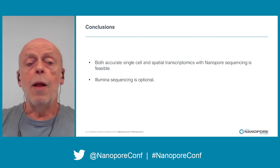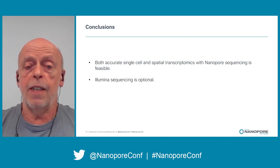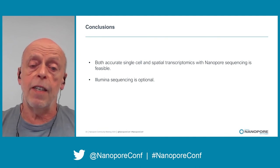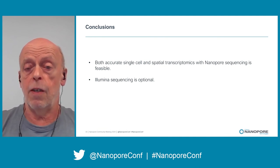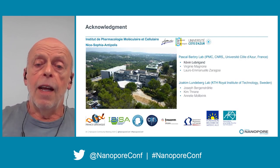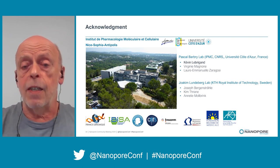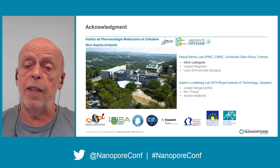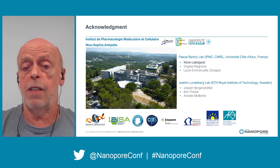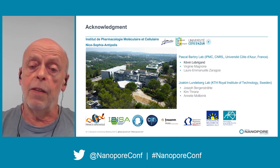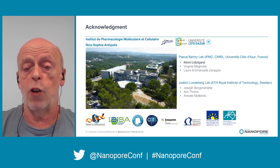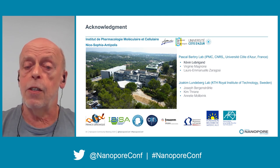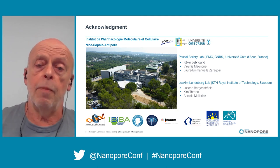In conclusion, both accurate single-cell and spatial transcriptomics with nanopore sequencing is feasible, and I think Illumina sequencing is meanwhile optional. We're going to move more and more to nanopore-only sequencing. Most of this study was done in Pascal Barbry's lab in Nice, and Kevin LeBricon did most of the data analysis. The Visium spatial transcriptomics study was done in collaboration with Joakim Lundeberg's lab in Stockholm. Thank you, and I'm happy to take questions.